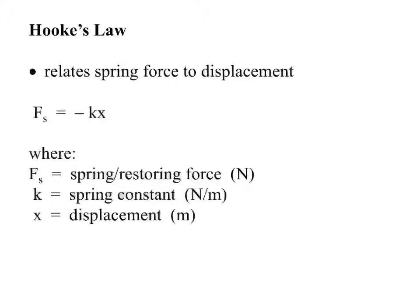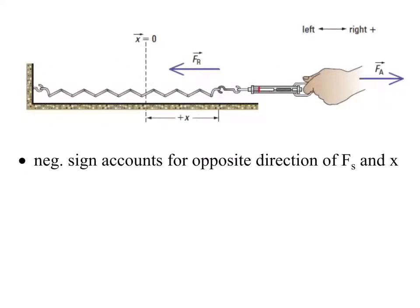Why is there a negative sign there? There's a negative sign because it accounts for the opposite direction of the spring force in x. Because anytime you displace a spring, you're displacing it in the opposite direction of where it wants to go back to. So, if I want to move this spring to the right, then I have to apply a force to the right, but it wants to go back to the left. The displacement is from the left, and it wants to go back to its equilibrium that's to the left.